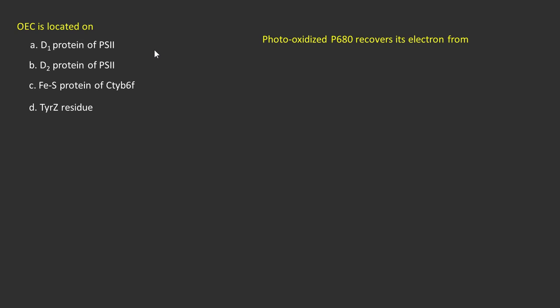Second question: Photo-oxidized P680 converts its electron. Options: tyrosine residue of D1 polypeptide of PS2, tyrosine residue of D2 protein, Mn directly, and Rieske iron center of cytochrome B6F.